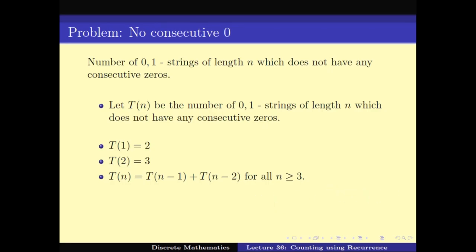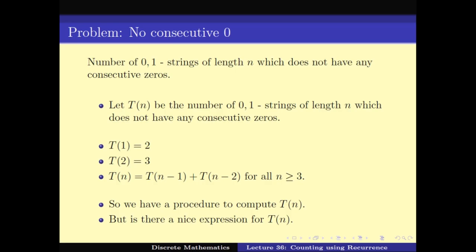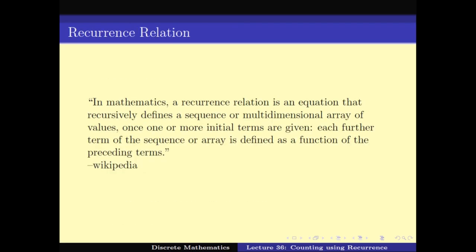But one can ask: can we get a better procedure for computing T_n, rather than applying the recurrence n times? Can we find a closed-form expression for T_n — like 2^n / n or something similar, as we got for distributing n balls into k bins? This brings us to the topic of recurrence relations.